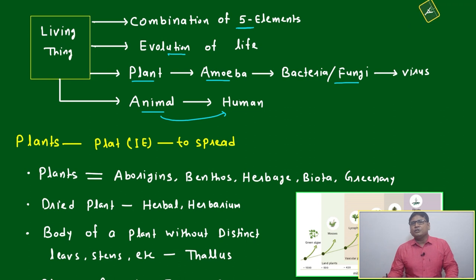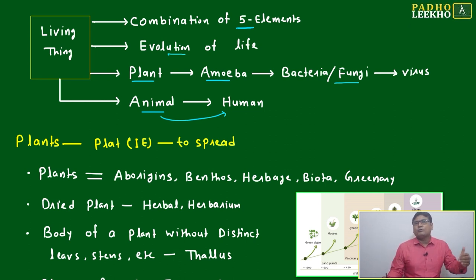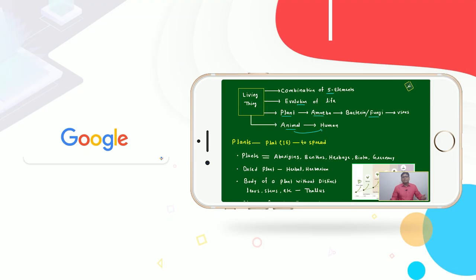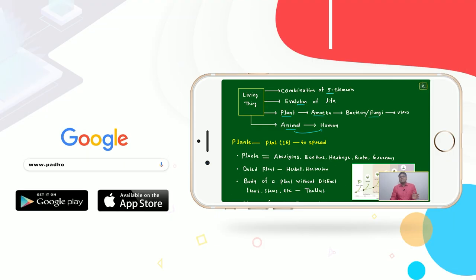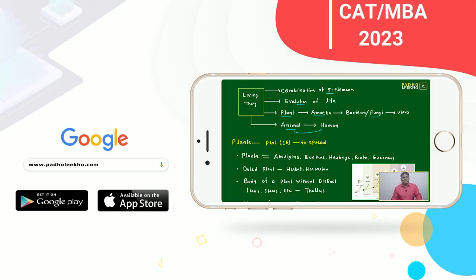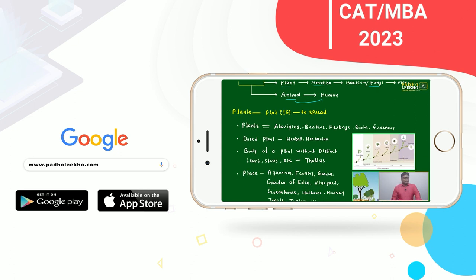Next is the animal, and the fully developed animal — that is the human being. We'll discuss about humans: how humans developed, how birth happens, how love happens, how marriage happens — that we'll discuss in the next ideas and units. But here we'll try to understand about animals and how humans have come. That's where we'll start.